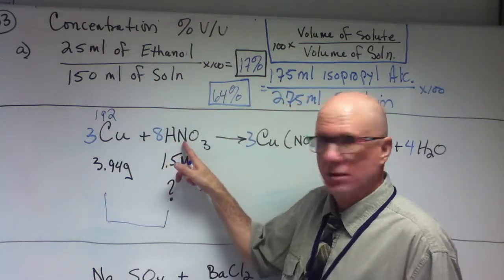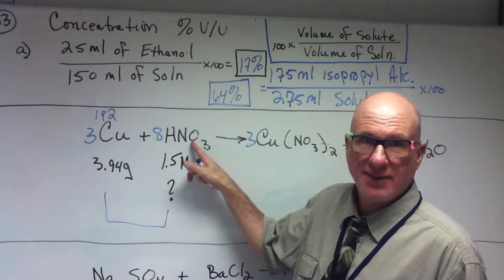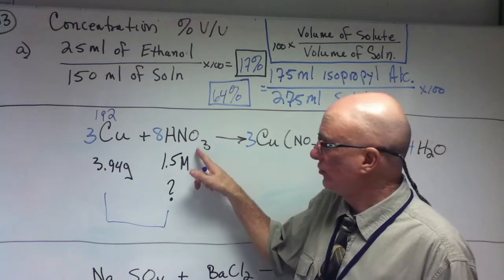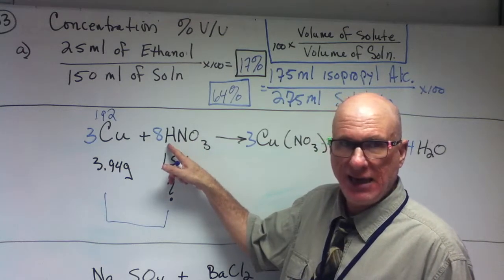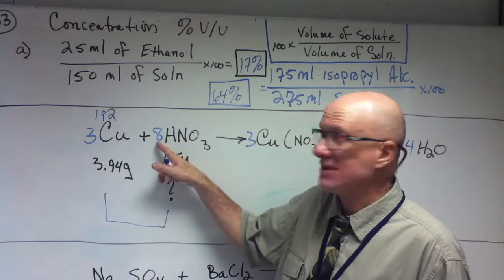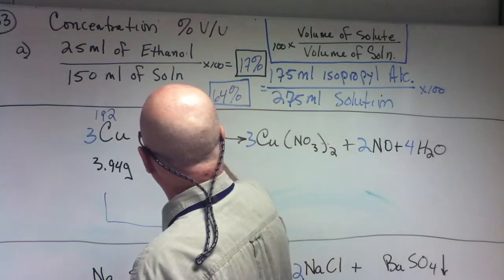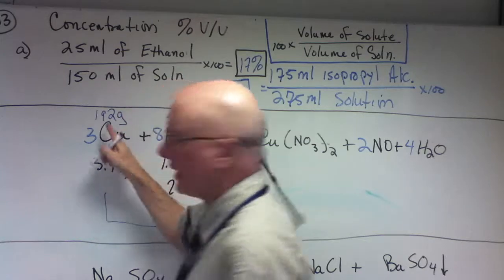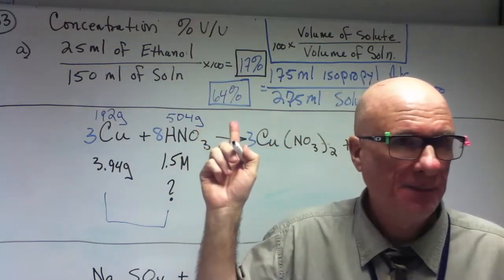Hydrogen is 1. Nitrogen is 14. And I'll even be a part-time calculator. Oxygen is 16 times 3 is 48. So 48 plus 14 plus 1 times 8. 504. Excellent. Well done, Gabby. 504. And what I did was I put those as stoichiometric masses.